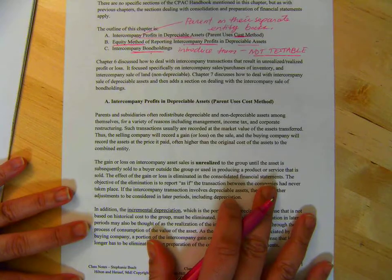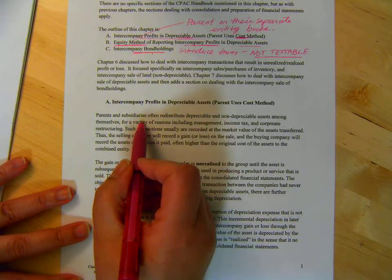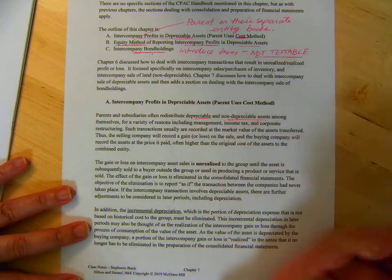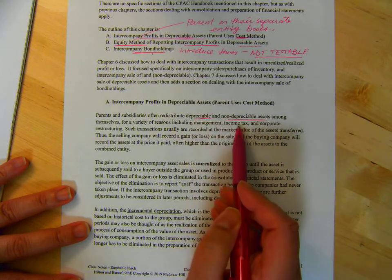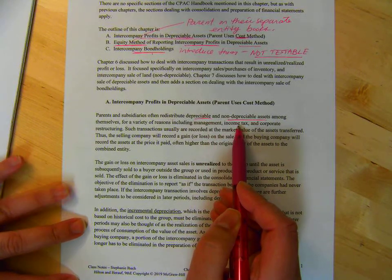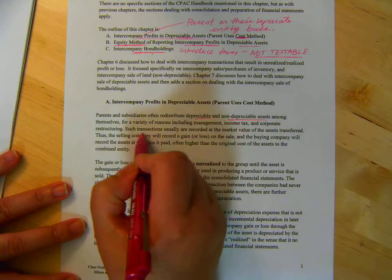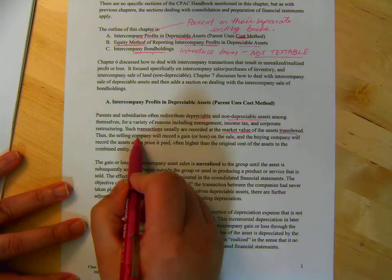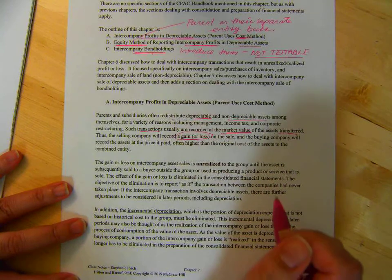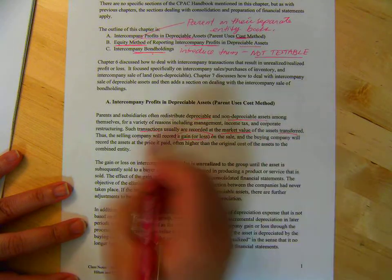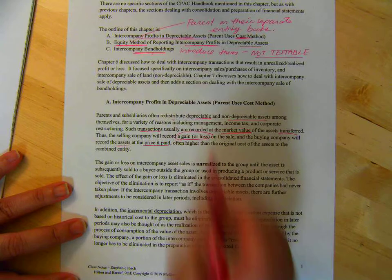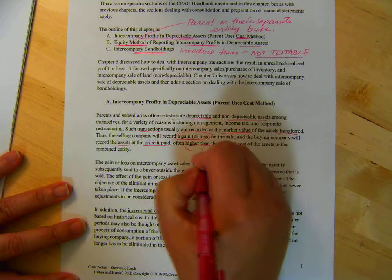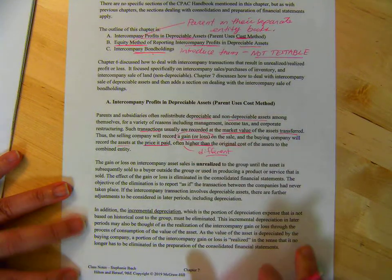So, let's start with A then. Parents and subsidiaries often redistribute depreciable and non-depreciable assets among themselves for a variety of reasons. Management, income tax, because remember income tax is calculated on the separate entity books, and corporate restructuring. So, the transactions are recorded at the market value of the assets transferred.